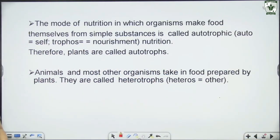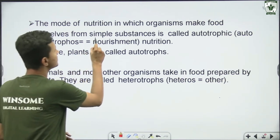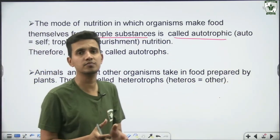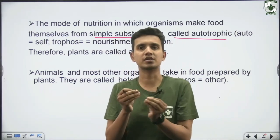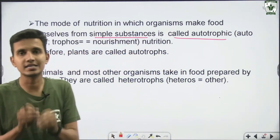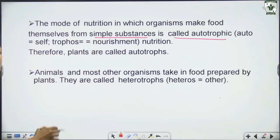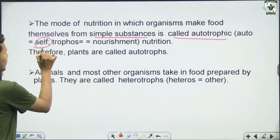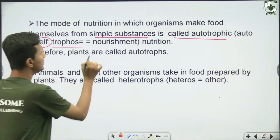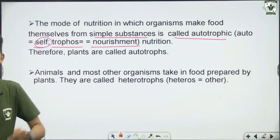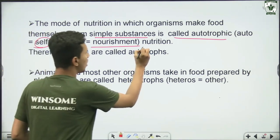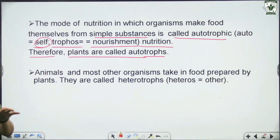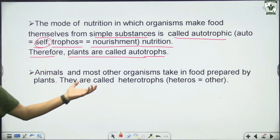The mode of nutrition in which organisms make food themselves from simple substances is called autotrophic nutrition. An organism uses simple materials and synthesizes its own food. The word 'auto' means self and 'troph' means nourishment — so autotrophic means making their own food. Plants are therefore called autotrophs because they can synthesize their own food.